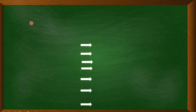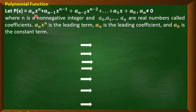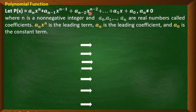Now let us describe the polynomial function. Let P(x) = a_n·x^n + a_(n-1)·x^(n-1) + a_(n-2)·x^(n-2) + ... + a_1·x + a_0, where a_n ≠ 0, n is a non-negative integer, and a_0, a_1, ... a_n are real numbers called coefficients. Here, a_n·x^n is the leading term, a_n is the leading coefficient, and a_0 is the constant term. The terms are arranged in descending order — this is the standard form.